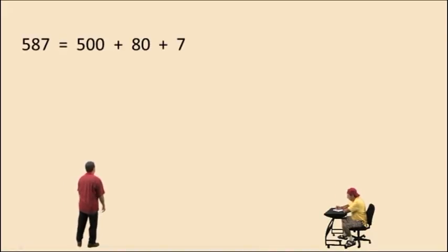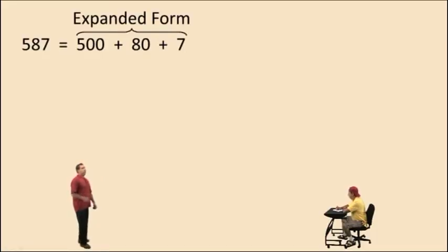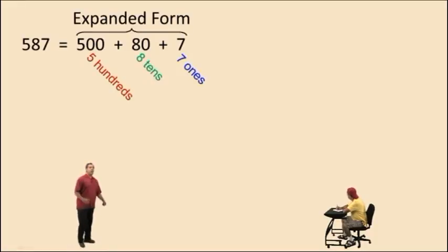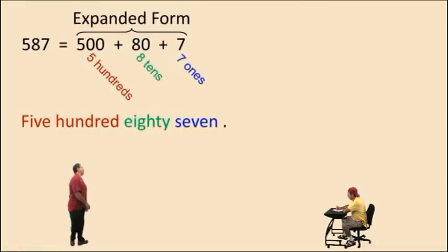Last time we were talking about expanded forms of numbers. Remember, writing numbers in expanded form help you remember place value. So 587 in expanded form, Charlie, is written this way: 500 plus 80 plus 7. That sum is the expanded form. And we wrote it that way because we have five hundreds, eight tens, and seven ones. Now how do we say the number correctly? 587. And that's it.